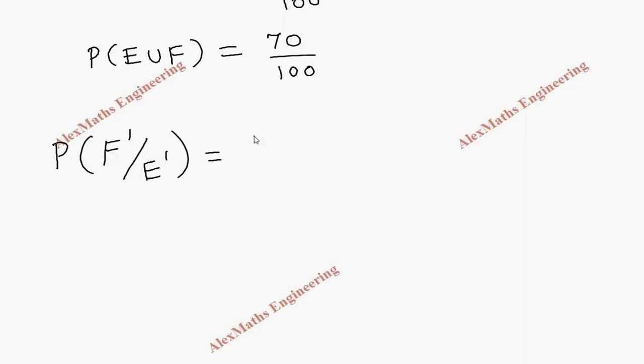Let's write the formula. This is P(F dash intersection E dash) whole divided by P(E dash). In the numerator, we can write this as P(F union E whole dash) whole divided by P(E dash).